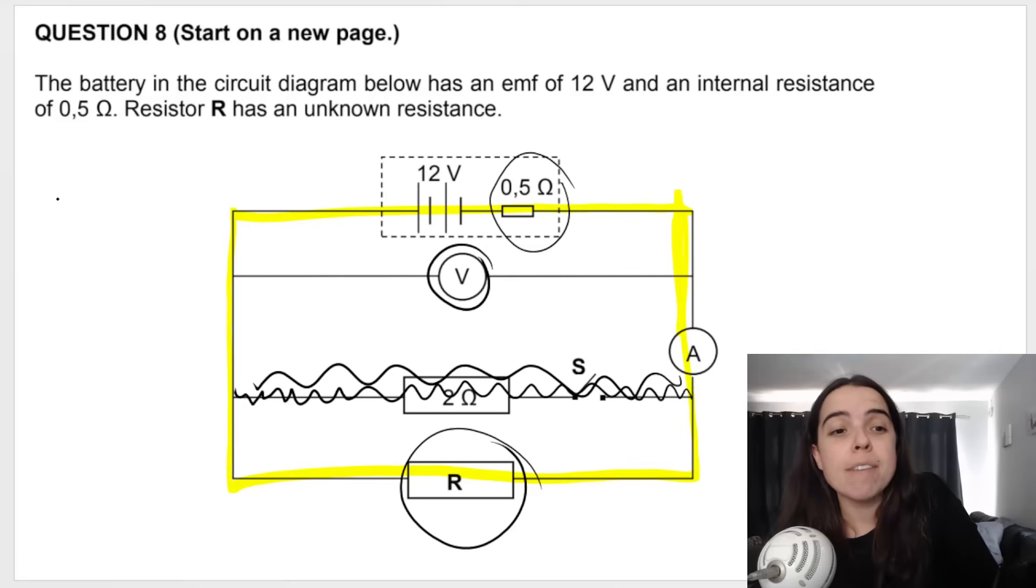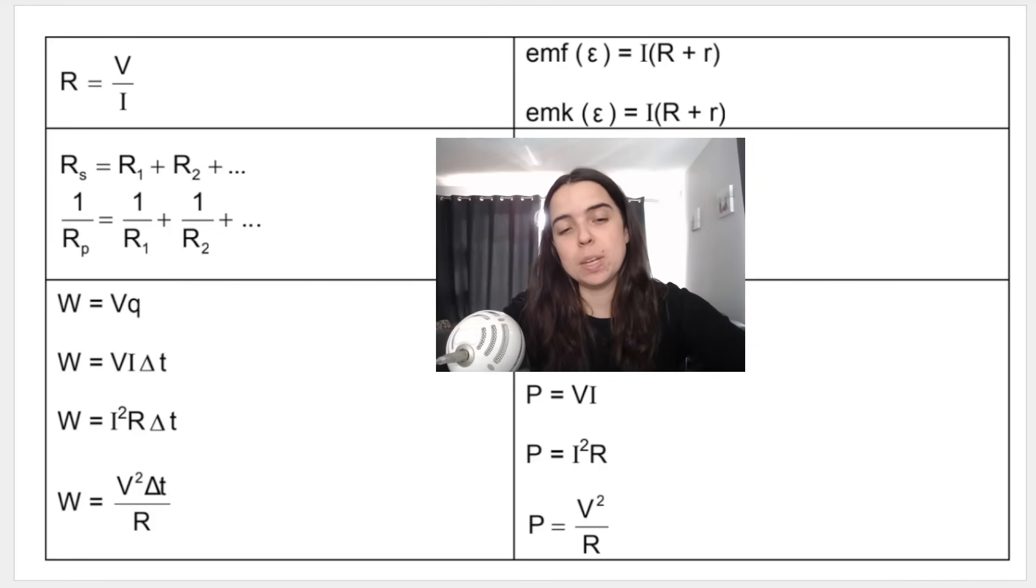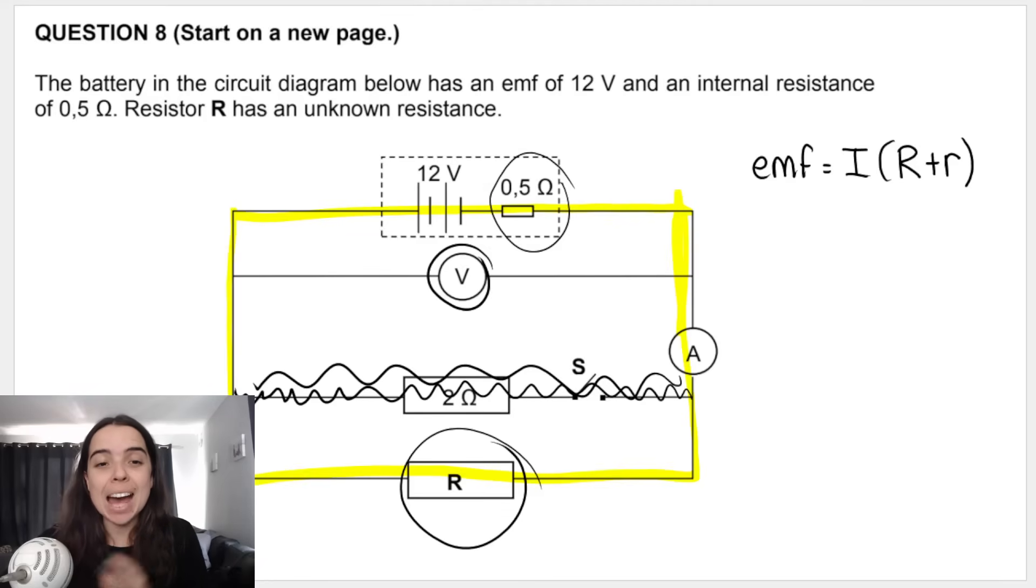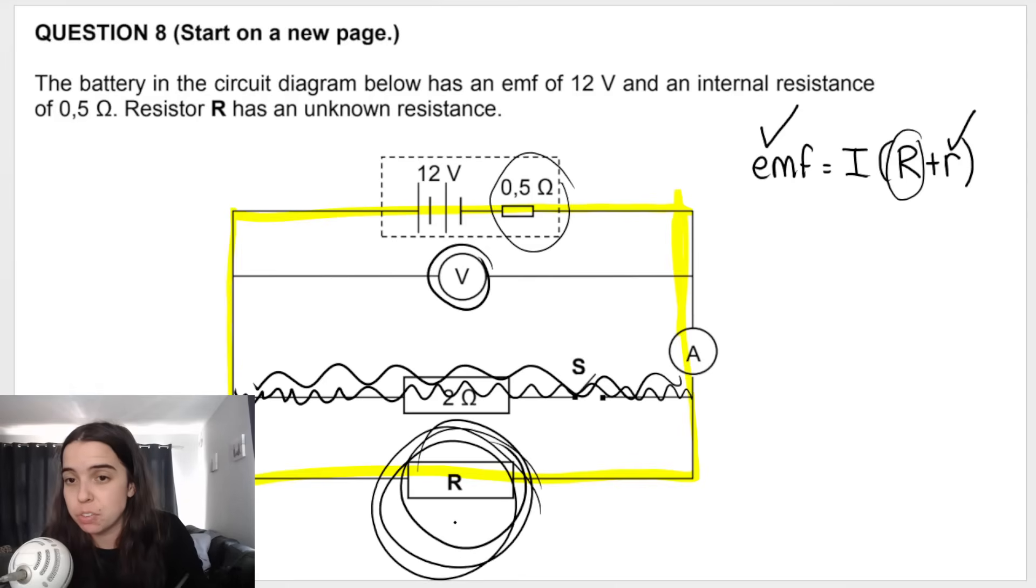Another formula that you have at your disposal, it is on the formula sheet, is the EMF formula. But using this formula, as it's given over here, is not going to help me. The reason why is because although I have EMF, it is 12, and I know baby R is 0.5, I do not know big R, and I cannot calculate it because I don't know this resistor over here. I also don't know the current. So I have too many unknowns. It's not going to help me. And where's V external in that formula anyway?